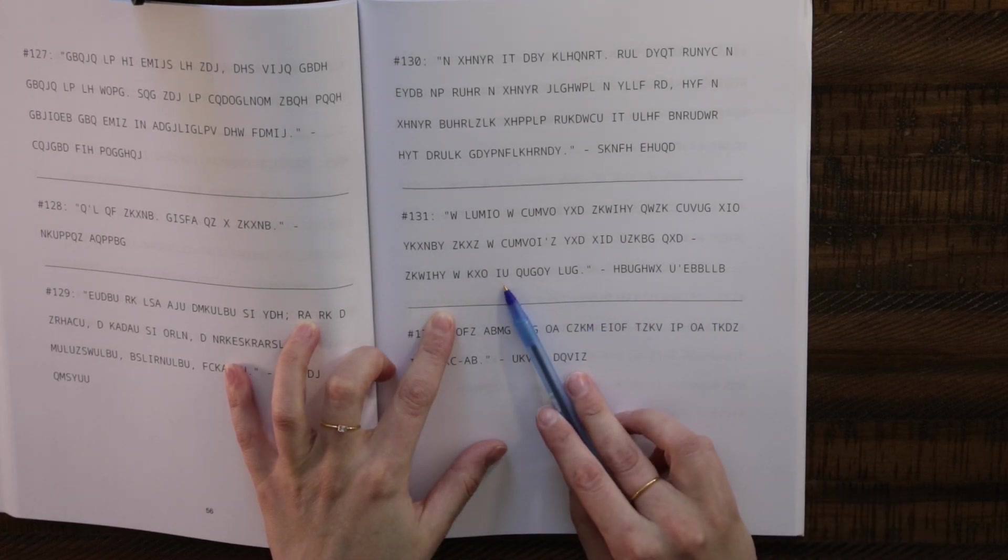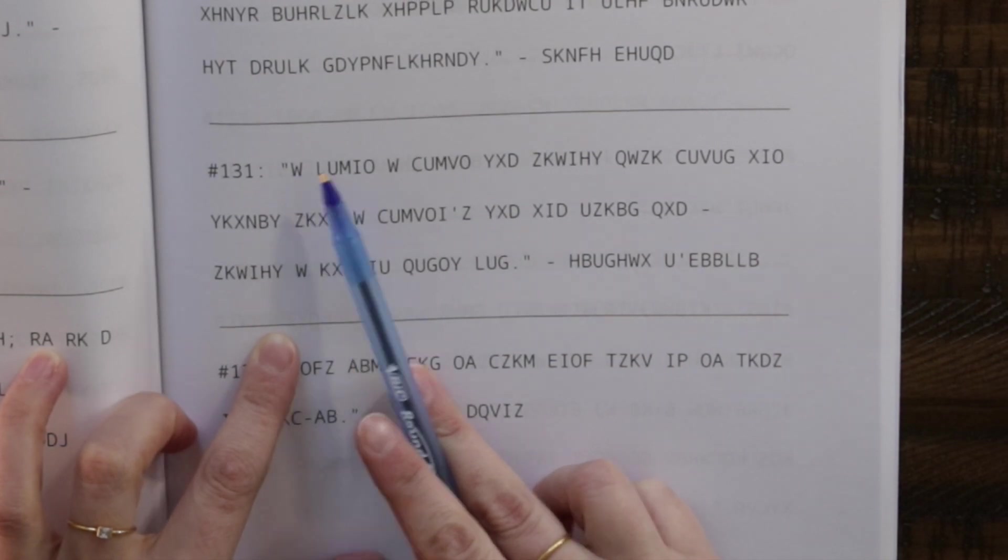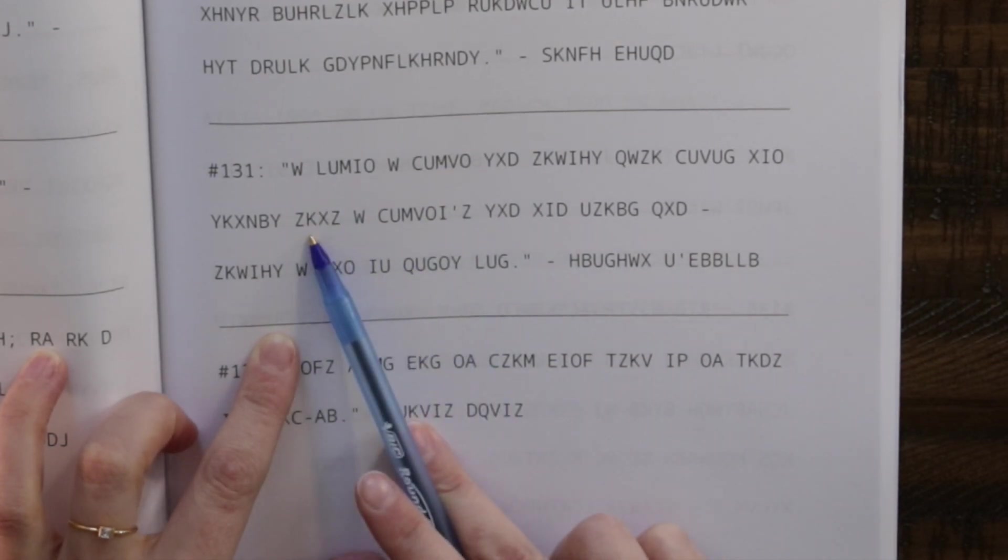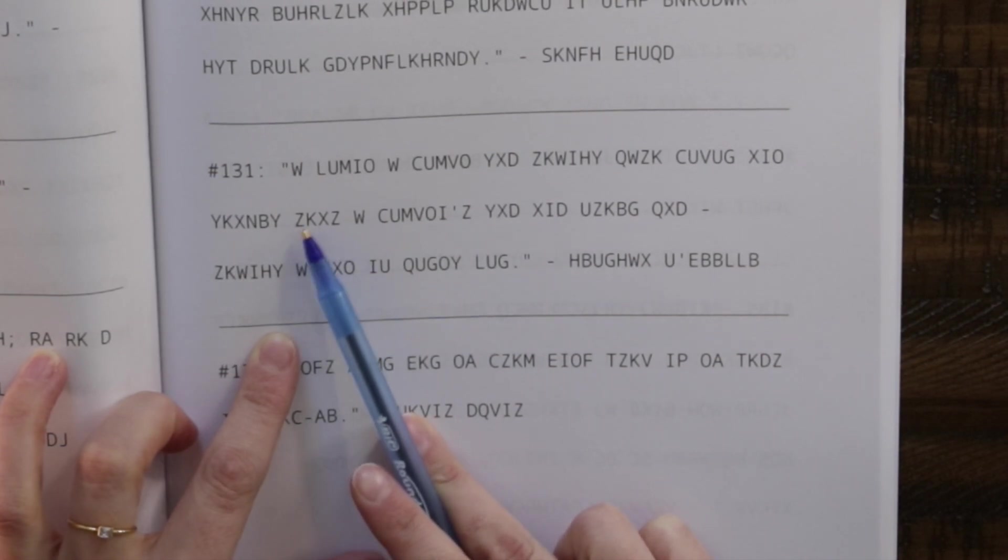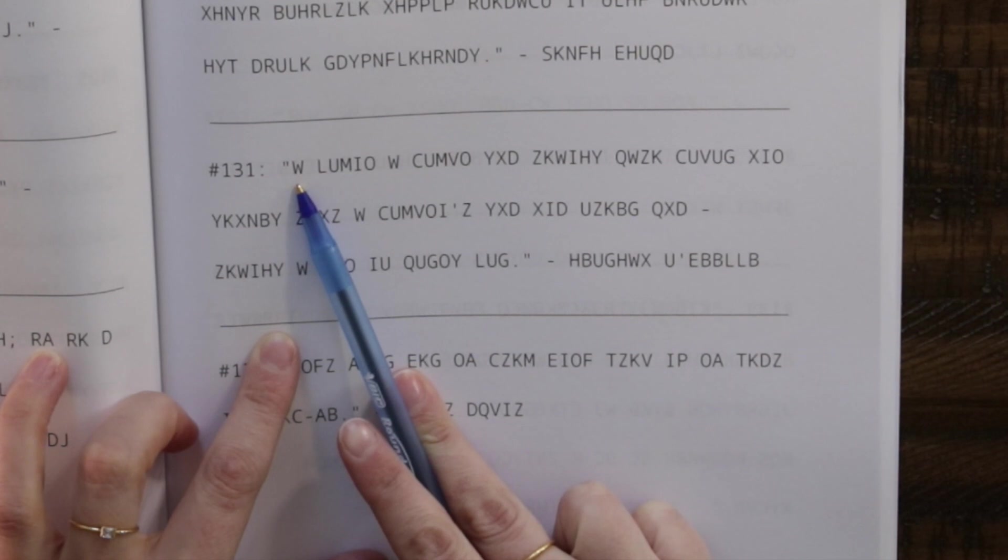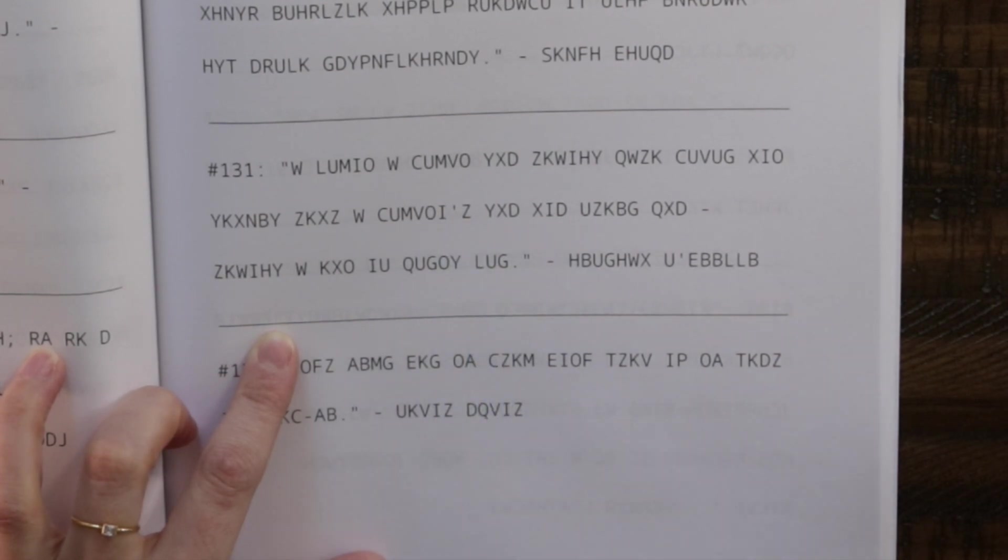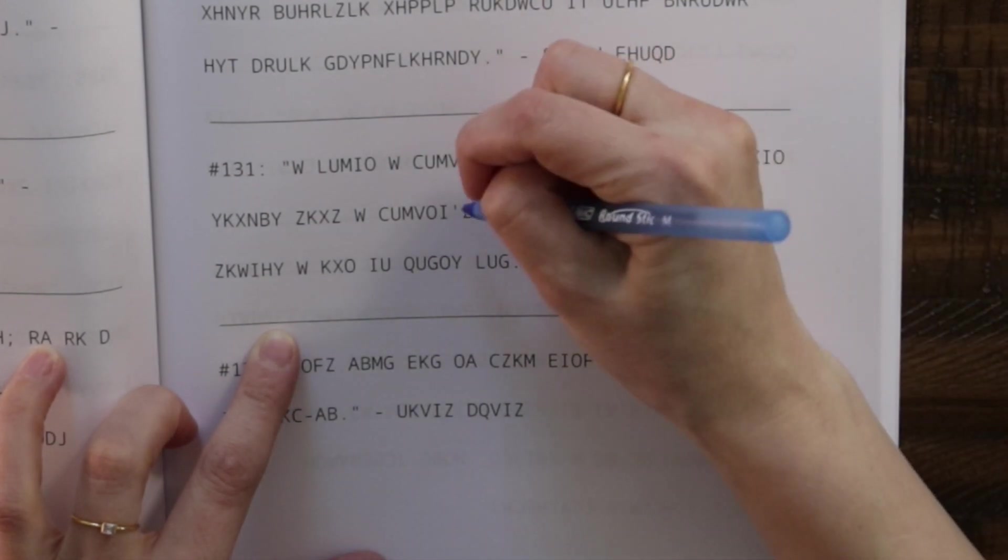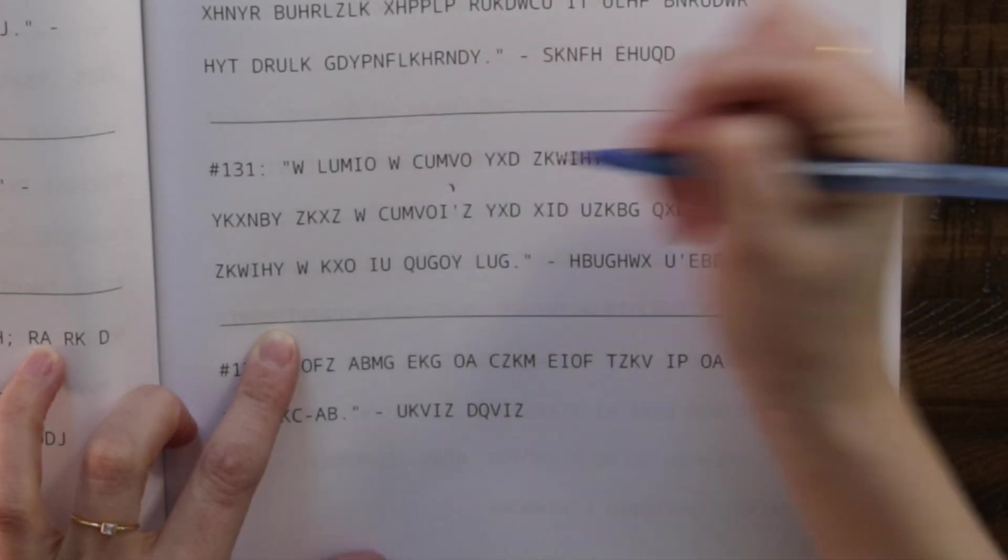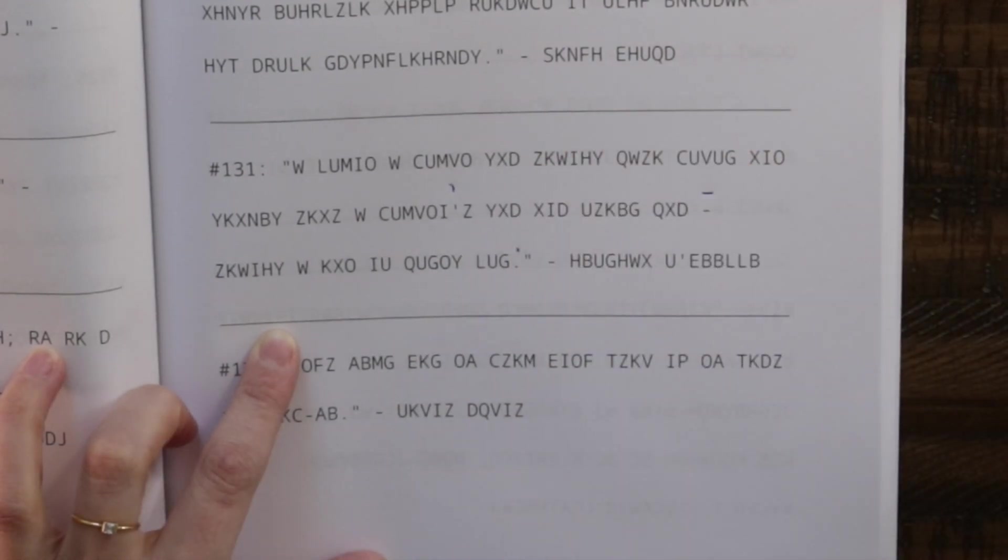So as we know with a cryptogram or crypto quote, each letter is going to take the place of another letter and the codes are always different. So these are just basically like symbols holding place for another letter. For example, W here is probably going to be A or I, and then we also want to look for things like punctuation. The whole thing is in quotes, we see an apostrophe right here, a nice little dash and a period, so it's one sentence long.